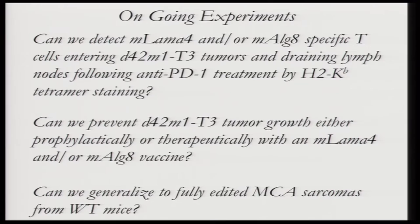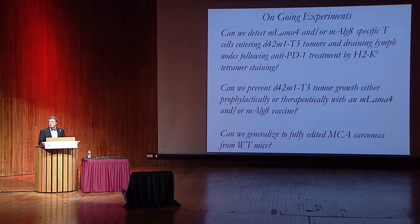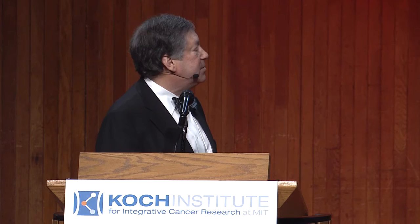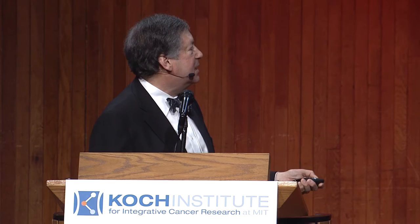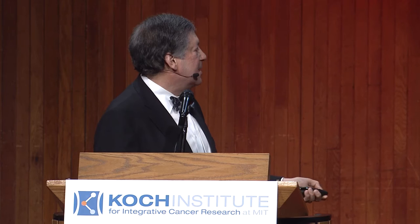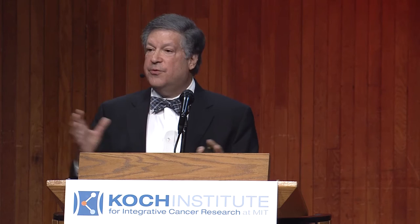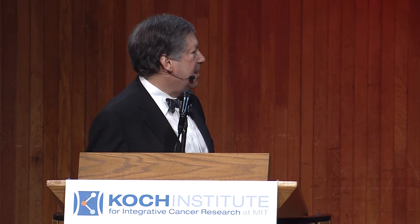Clearly, we've got to prove that these are, in fact, the relevant physiologic peptides causing the rejection. We're doing three sets of experiments. First, we're making tetramers with peptides from mutant Lama-4 and mutant ALG8 bound to K of B and asking whether we can detect T-cells specific for these two mutant antigens coming into the tumors over time. Second, we're looking to see whether we can prophylactically or therapeutically vaccinate with these peptides and protect against tumor outgrowth. And the final test would be to do this now in fully edited MCA sarcomas that originate in wild-type mice, grown up entirely in the presence of the adaptive immune system.